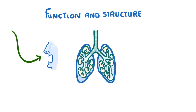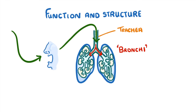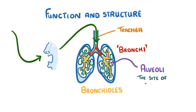Whenever we breathe in, air first passes through our mouth or our nose and then down our trachea, which is also known as the windpipe. From there it divides between our two bronchi, and then further divides between successive branch-like structures which we call bronchioles. Once the air has made its way through all of these branches, it reaches small sacs arranged like bunches of grapes. These sacs are called alveoli and they're the site of gas exchange.